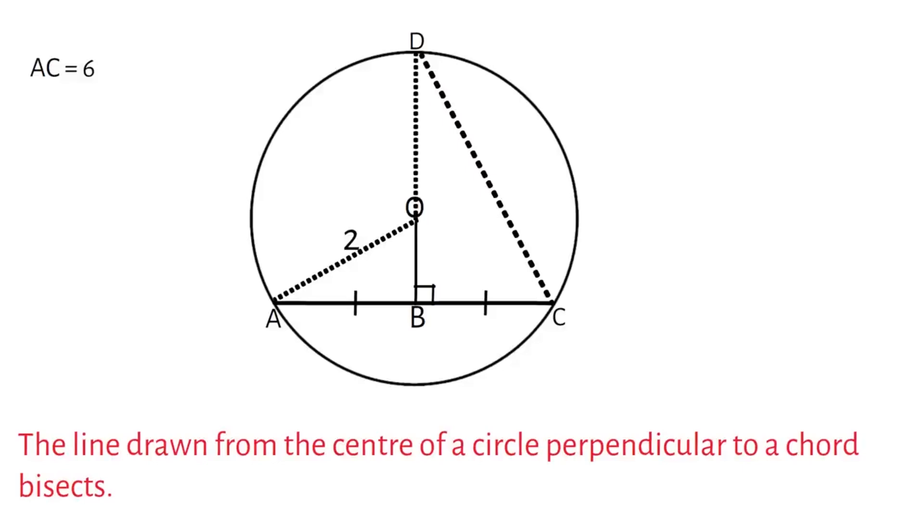Another way to look at it is that since AC is six units, AB, which is half of AC, will be three units. BC will be three units. Remember that AC is bisected.